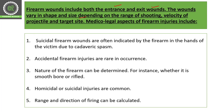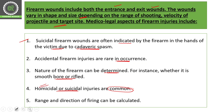Firearm wounds include both entrance and exit wounds, and their characteristics depend on the range of shooting, velocity, projectile, and target site. Suicidal firearm wounds are often indicated by the firearm remaining in the victim's hand due to cadaveric spasm. Accidental firearm injuries are rare. Homicidal and suicidal injuries are most common, with homicidal being more frequent. The nature of the firearm — whether smooth-bore or rifled — and the range and direction of firing can be determined from the wound characteristics.